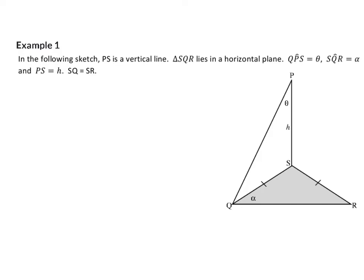Example 1. In the following sketch, PS is a vertical line and triangle SQR is in a horizontal plane.